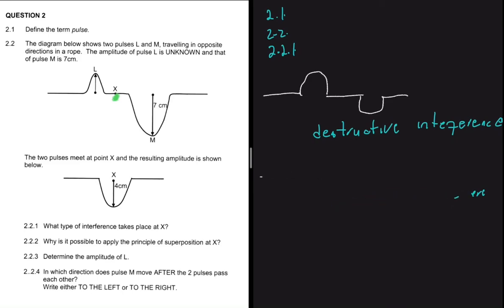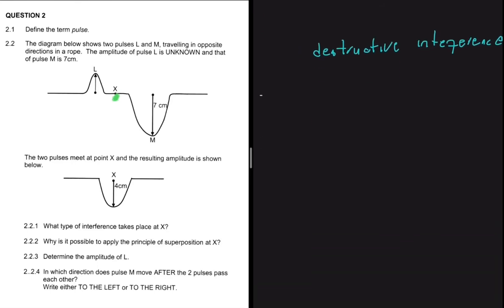Now 2.2.2: why is it possible to apply the principle of superposition at X? We can only apply the principle of superposition when two pulses occupy the same space at the same time. That is the condition for the principle of superposition — the two pulses occupy the same place at the same time.